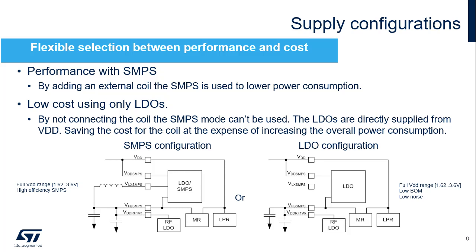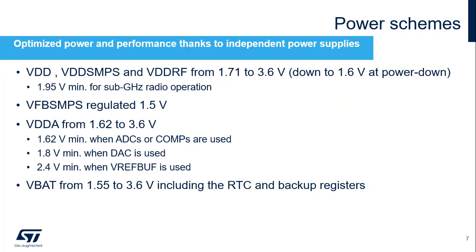For the lowest cost, the LDO configuration can be used. The main power supply, VDD, ensures full-featured operation in all power modes from 1.71 up to 3.6 volts, allowing supply by an external 1.8 volt ±5% regulator. Device functionality is guaranteed down to 1.61 volts, the minimum voltage after which a brownout reset is generated. Sub-gigahertz radio operation is allowed down to 1.95 volts.